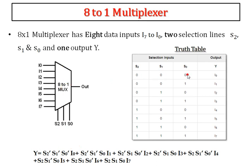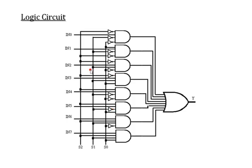From the truth table: 0,0,0 results in I0; 0,0,1 results in I1; 0,1,0 results in I2, and so on. Try to draw the Boolean expression and implement this. This is the logic circuit for the 8-to-1 multiplexer having 8 input lines, 3 selection lines, and 1 output line.